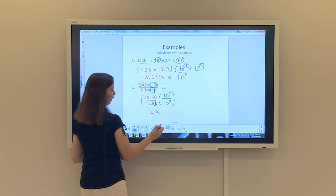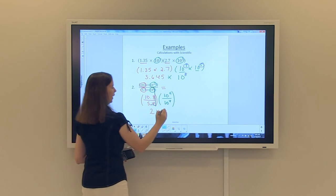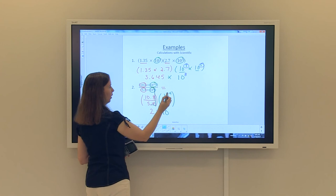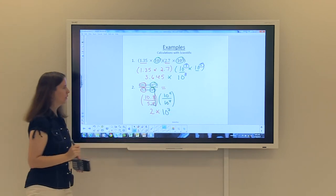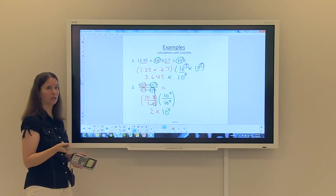And for the green part, 10 to the 11th divided by 10 to the fourth, I keep my base of 10. And when we divide like bases, we know that we subtract the powers. So 11 minus 4 would be 7. So my answer would be 2 times 10 to the seventh. And that kind of sums up our scientific notation.